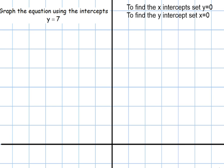We are going to graph the equation using the x and y intercepts. In order to find the x-intercept, we need to set the y value equal to 0. Well, there is no x-intercept, because when you have 0 equals 7, that doesn't even make sense. So there is no x-intercept.